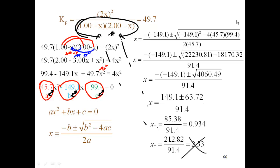So what that means basically is that this is not a realistic answer. I cannot use that answer. So the answer must be 0.934. That's the value that I'm going to use for X.